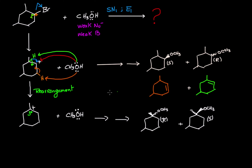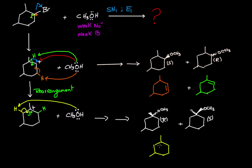For elimination from the rearranged carbocation, using the same color-code method: removing the green hydrogen gives a double bond that is identical to one already obtained from the original carbocation — so that product is not new. Removing the next beta hydrogen (drawn in orange) gives a new elimination product with the double bond in a different position, which is distinct from the previous products.